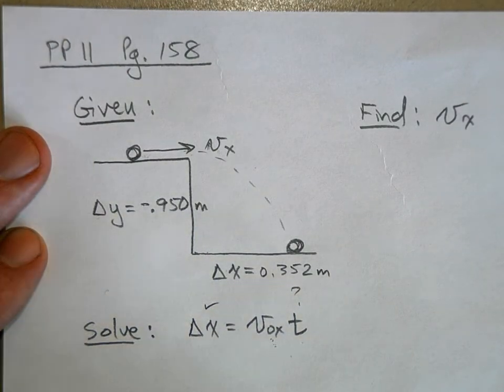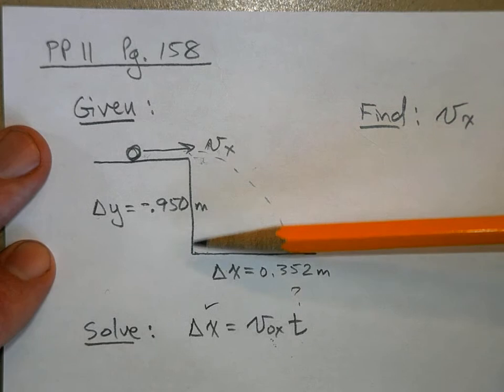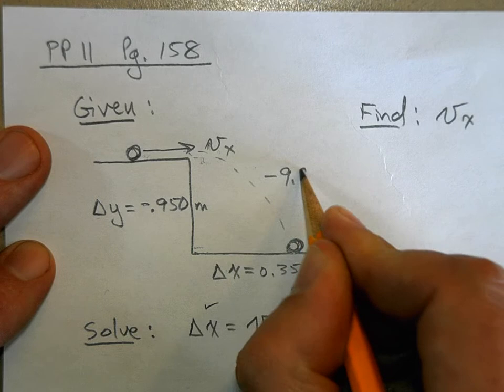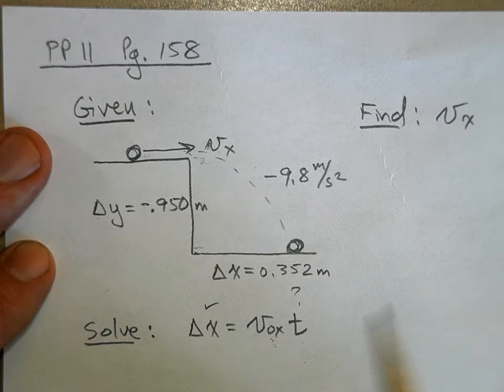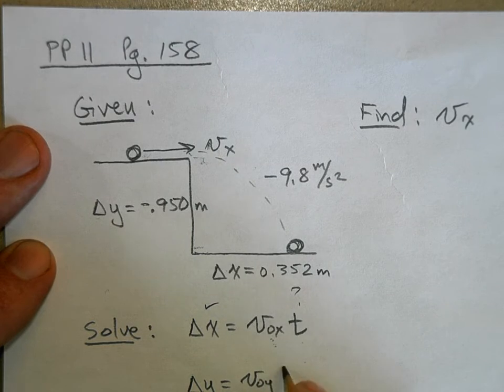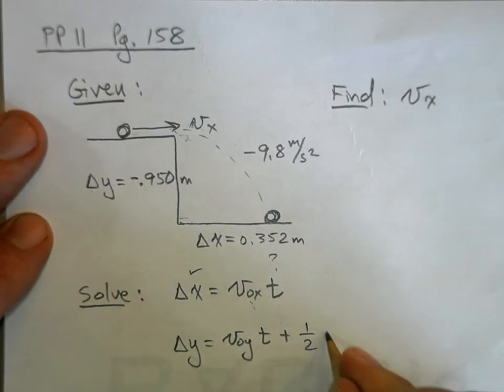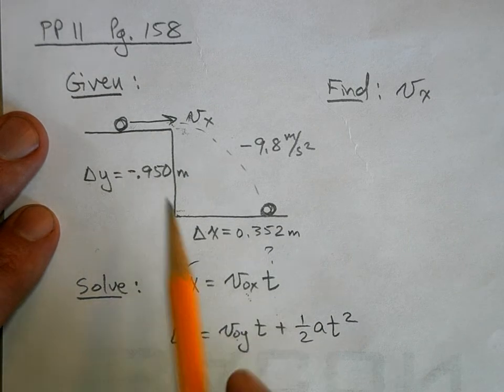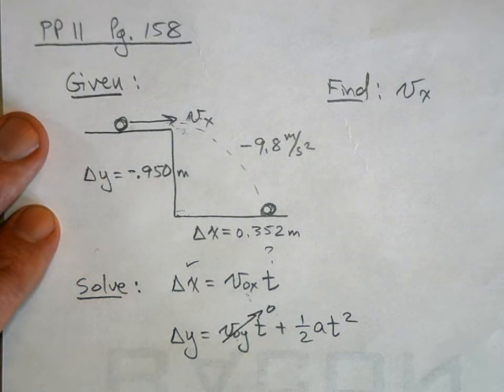So I look in the y direction and I notice, what do I know? I know Δy. I know what the acceleration in the y direction is, right? It's negative 9.8 meters per second squared. So I know the acceleration, I'm trying to find time. I'm going to use the third kinematic equation: Δy equals Voy times t plus one half a t squared. Now I know what the initial velocity in the y direction is. The ball is moving horizontally, it has no initial velocity in the y direction. So now I can solve for time.